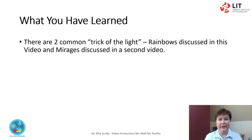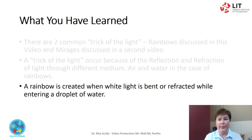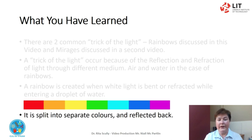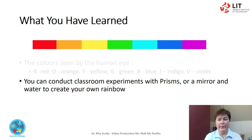What you have learned. There are two common tricks of the light: rainbows, discussed in this video, and mirages, discussed in a second video. A trick of the light occurs because of the reflection and refraction of light through different media — air and water in the case of rainbows. A rainbow is created when white light is bent or refracted while entering a droplet of water and split into separate colours — red, orange, yellow, green, blue, indigo and violet — and reflected back. You can conduct classroom experiments with prisms or a mirror and water to create your own rainbow.